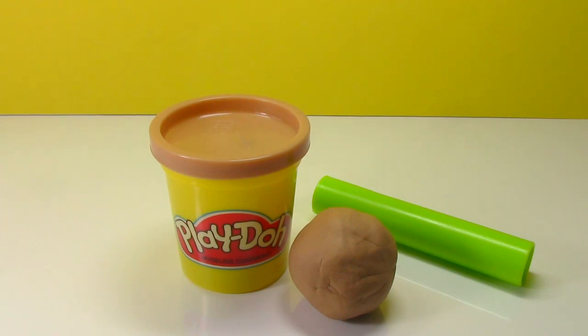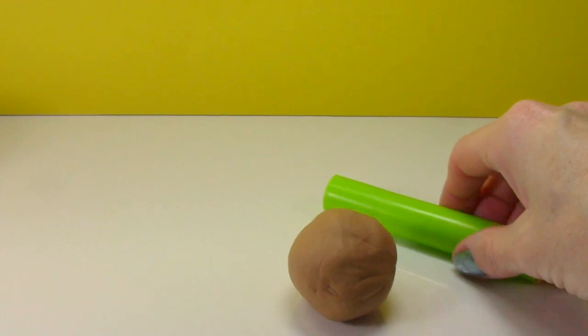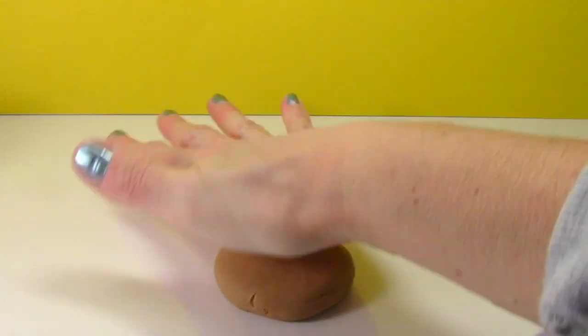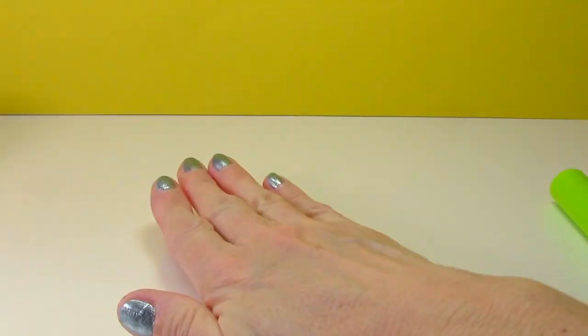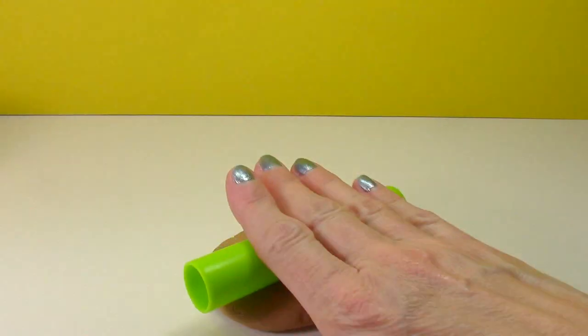We're going to use this light brown Play-Doh to make the bun. So first I'm just going to flatten out this ball of Play-Doh. Roll it out.